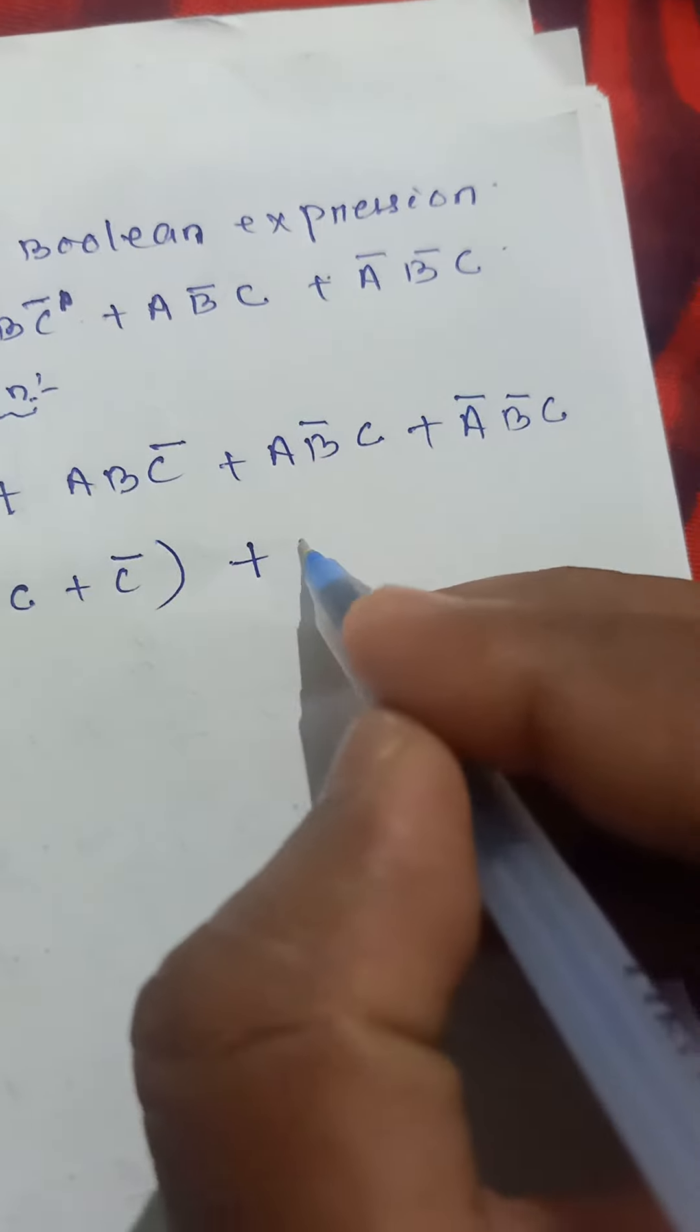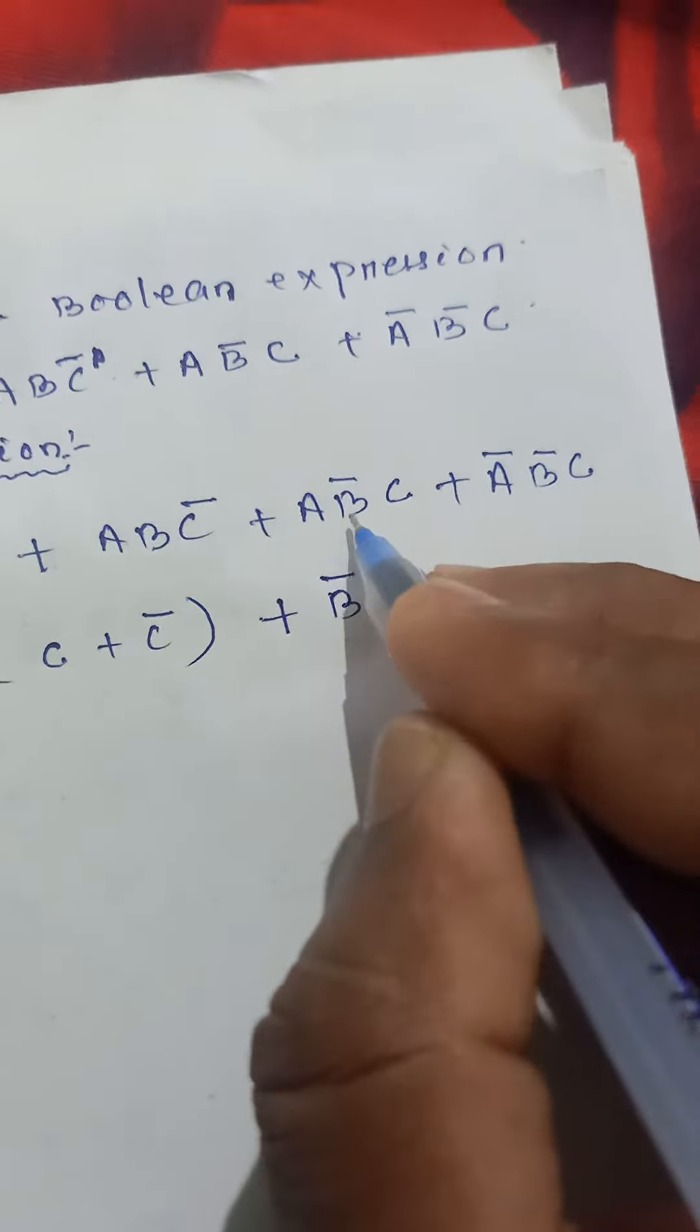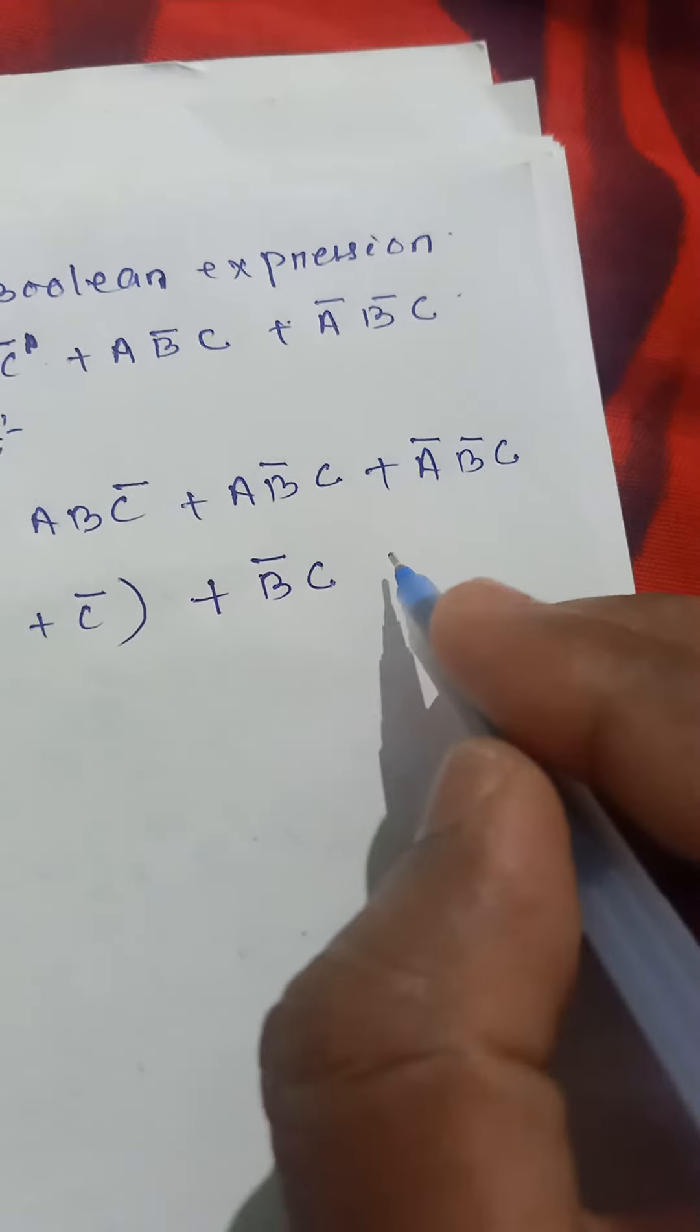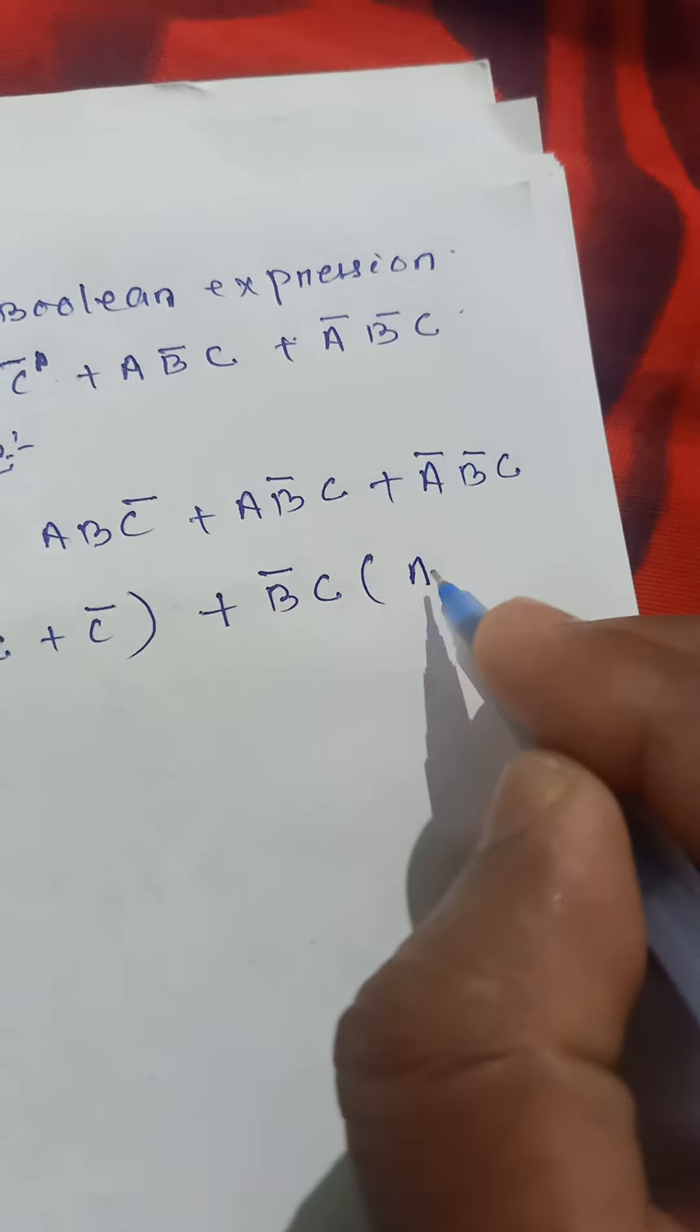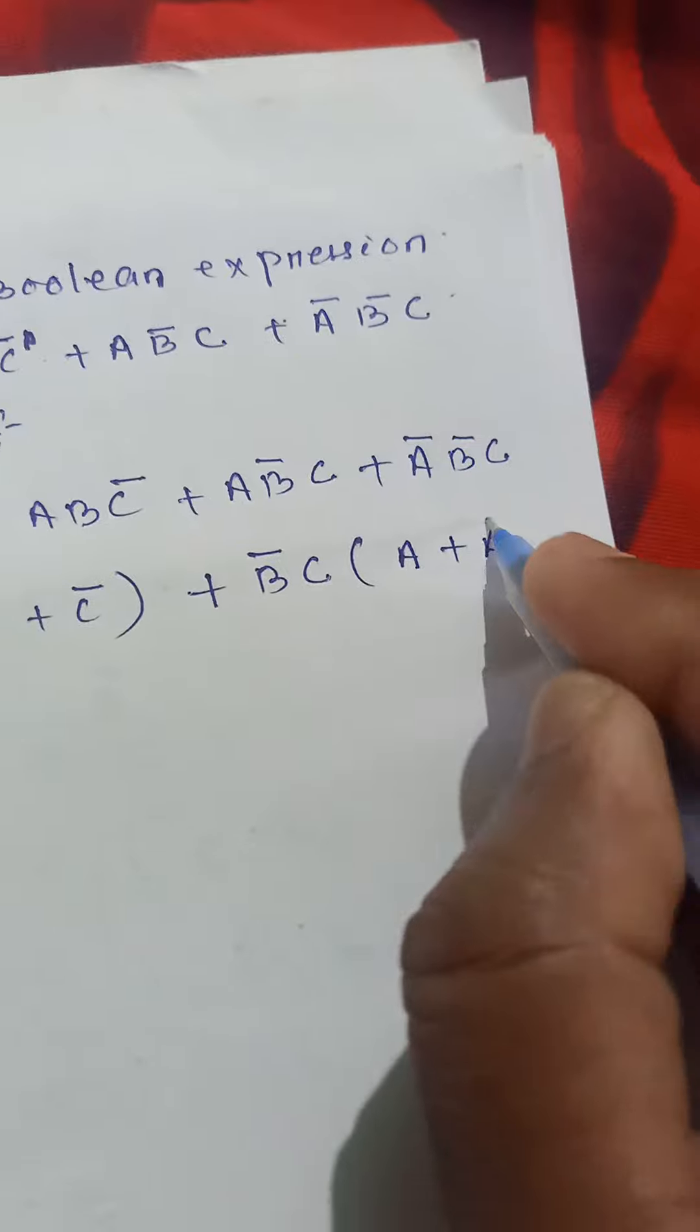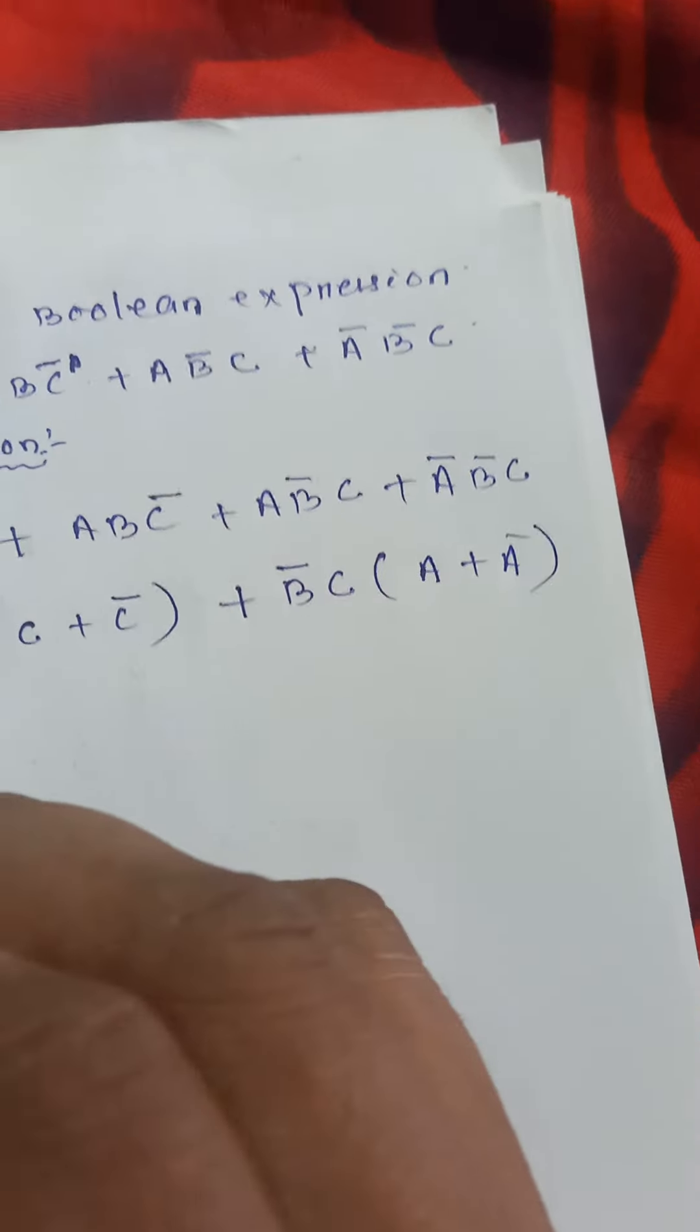B bar C is taking common, B bar C. Here B bar C and B bar C also is there, so now taking common B bar C, A plus A bar. Okay.